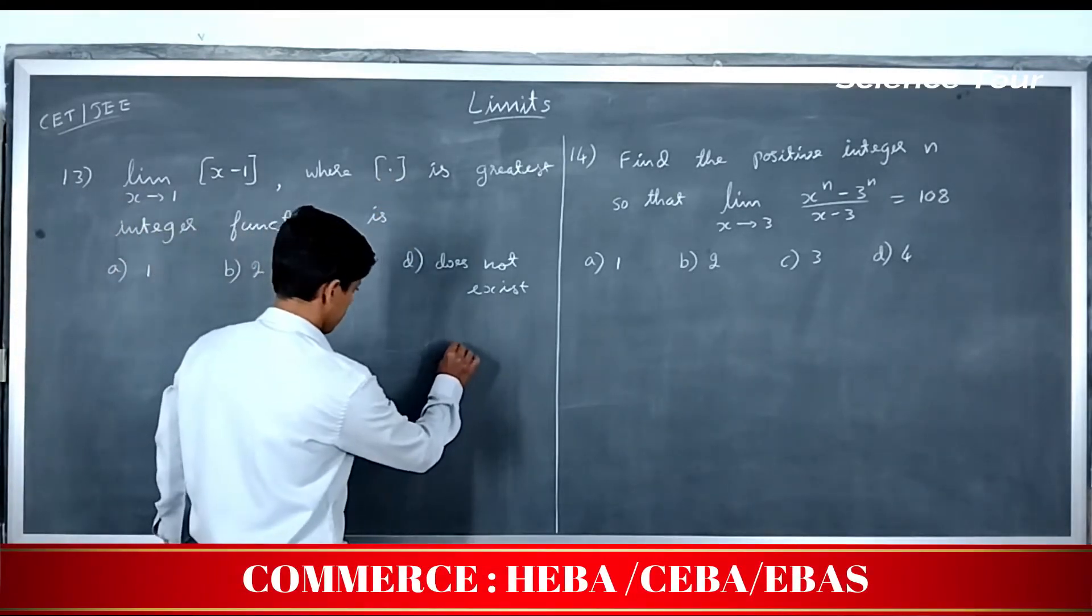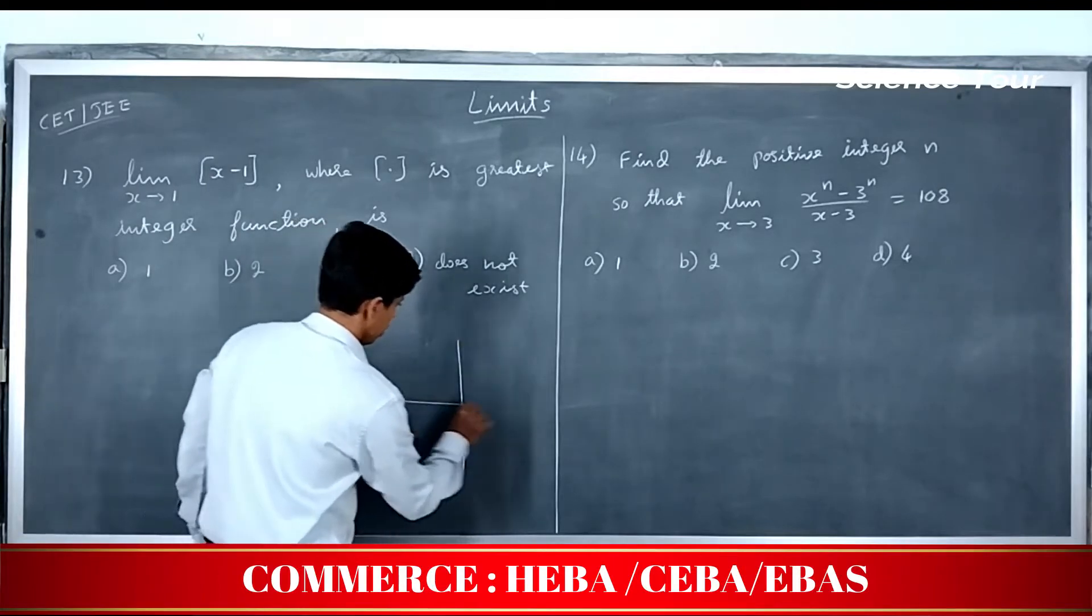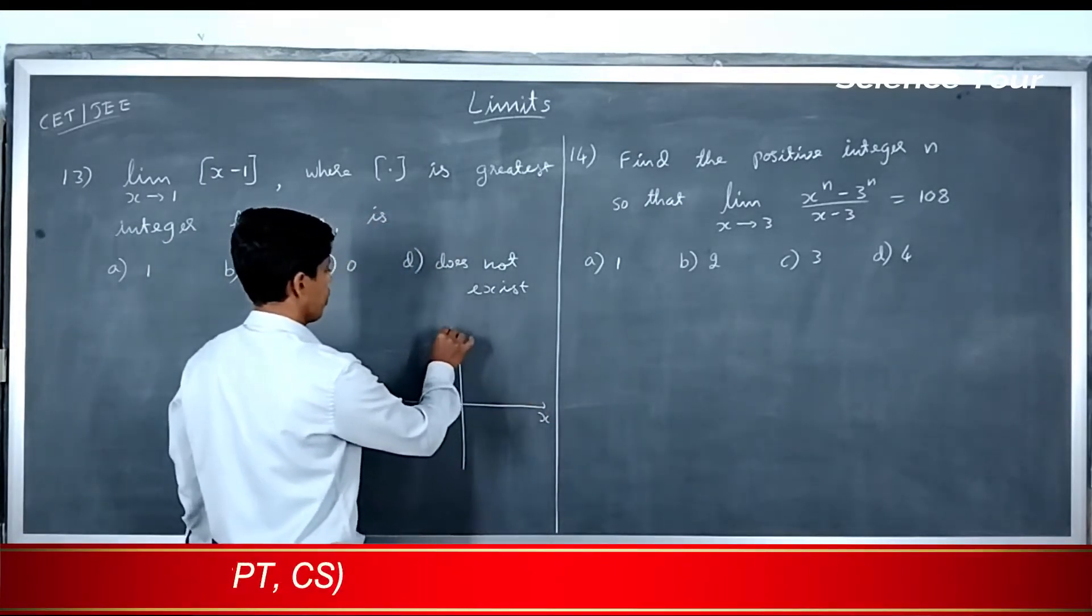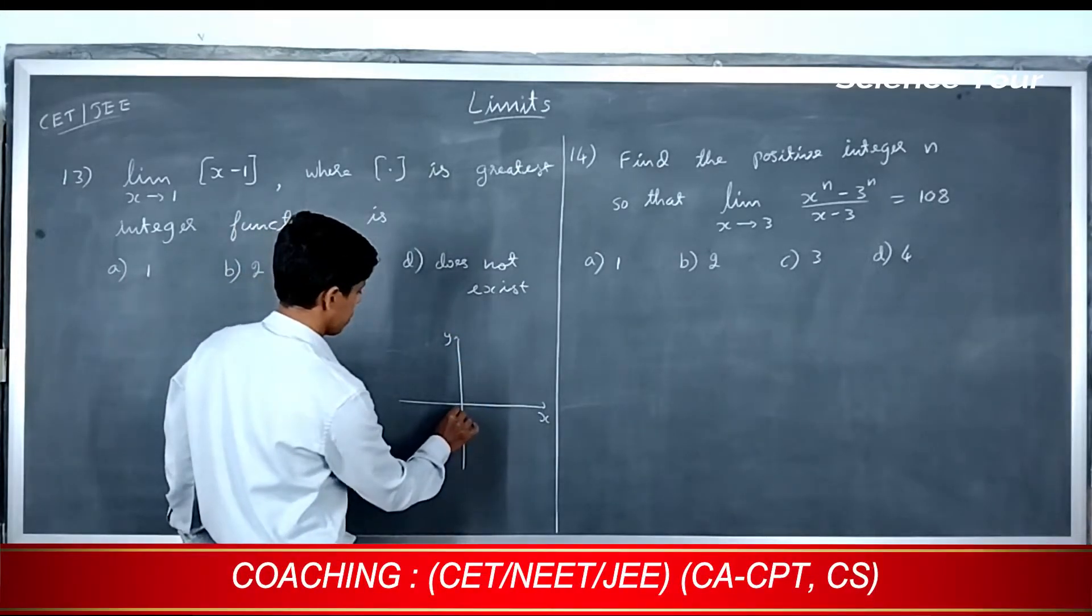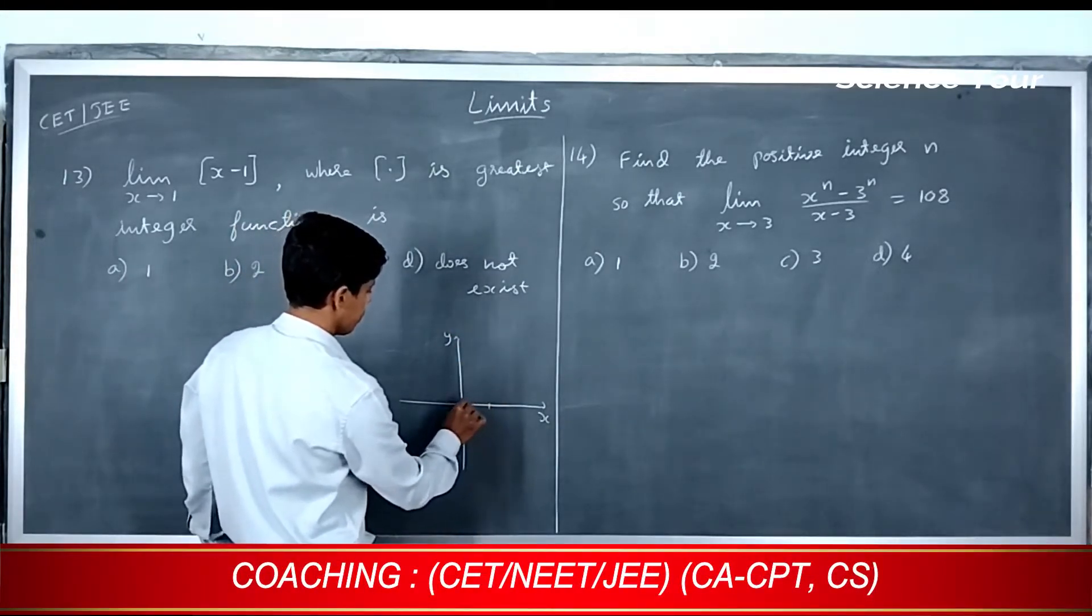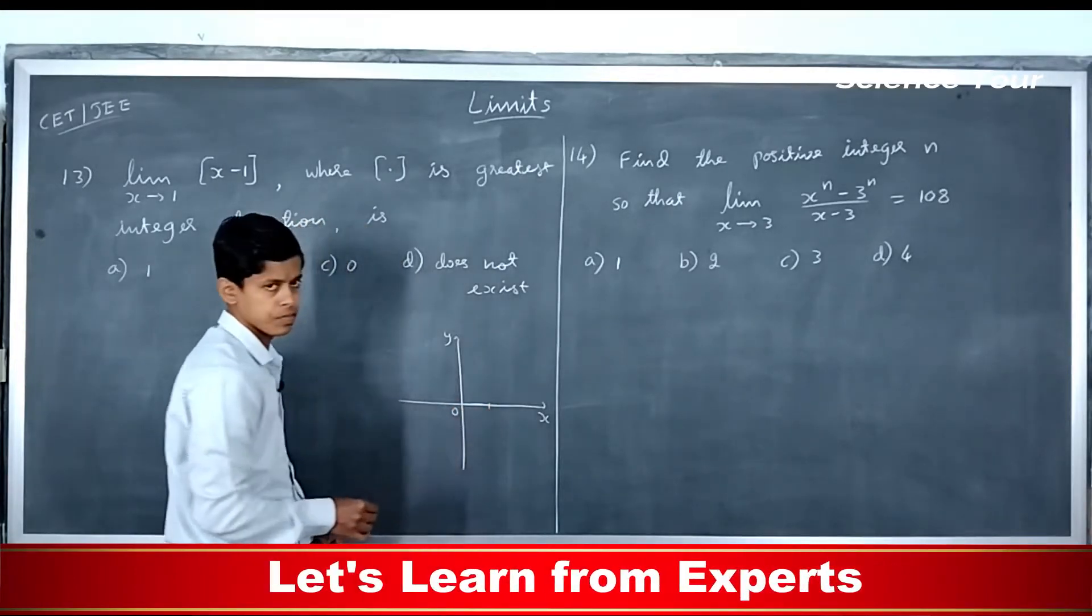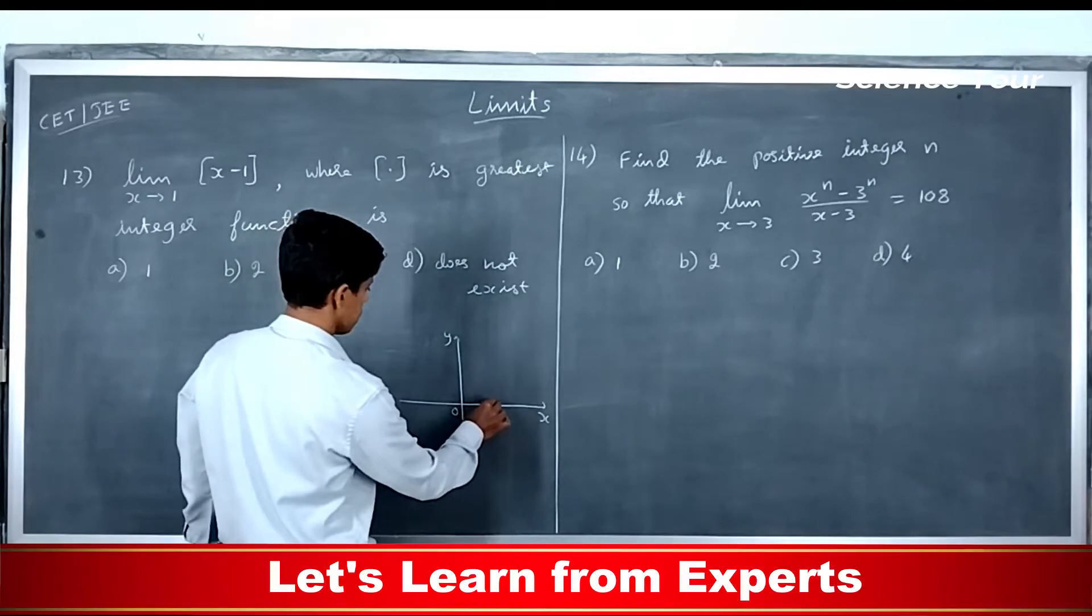Please understand the graph of greatest integer function, everything will fall in place. So you have x and y. From 0 to 1, you have the first step.